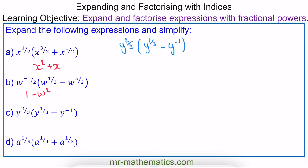For question c, we expand the brackets: we have y to the power of two thirds plus one third, minus y to the two thirds, minus y to the two thirds add the negative one. So we have y to the power of one, which is just y, minus y to the negative one third.